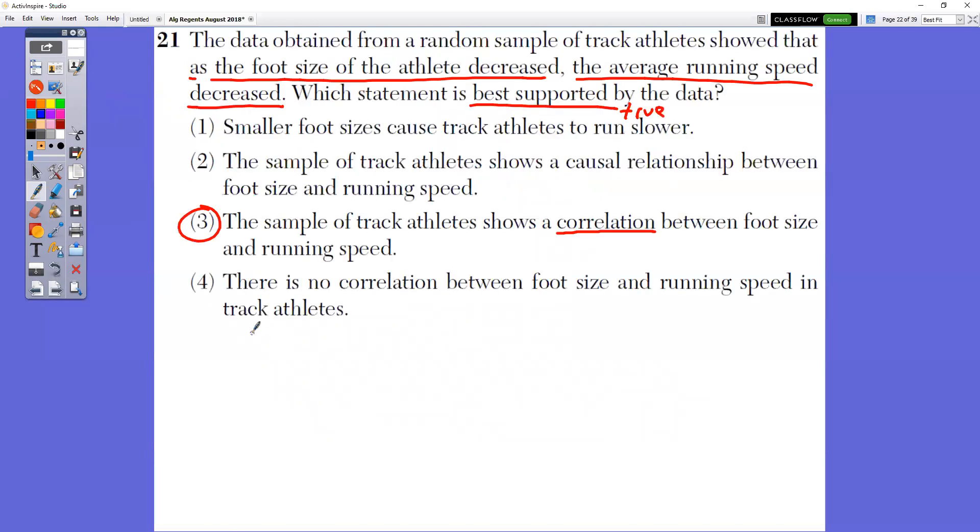In question number 21, the data obtained from a random sample of track athletes show that as the foot size of the athlete decreased, the average running speed decreased. Which statement is best supported by the data? So which one is true? Well, the only one that you can assume is true is choice three, that there is some sort of correlation between foot size and running speed, right? You can't prove these other ones to be true just from that statement.